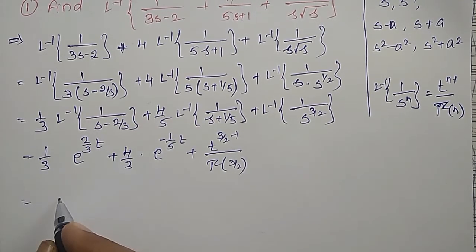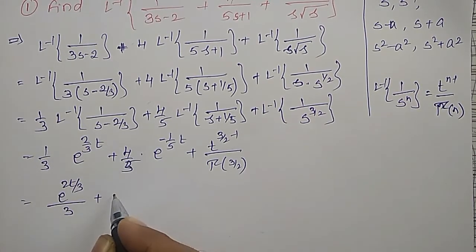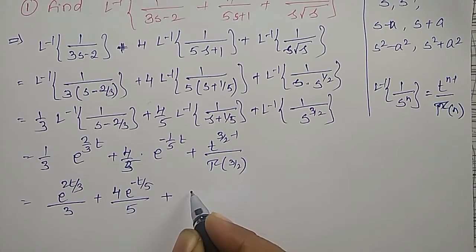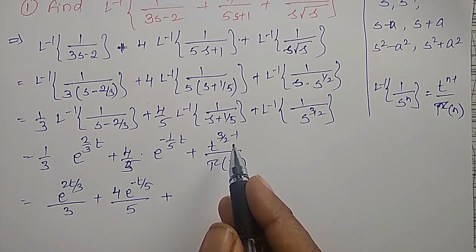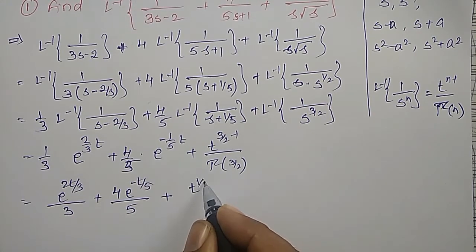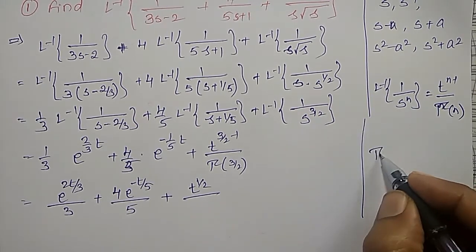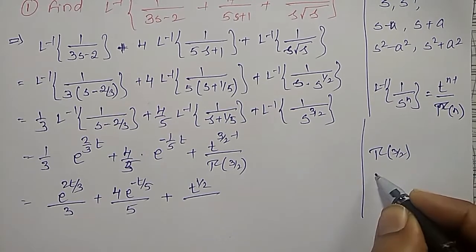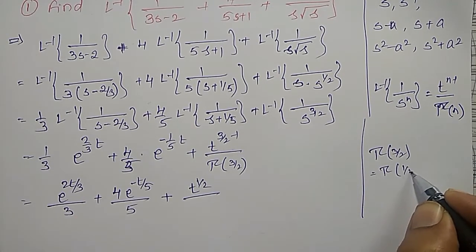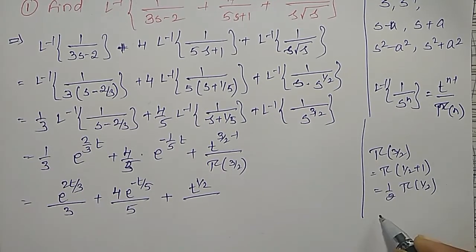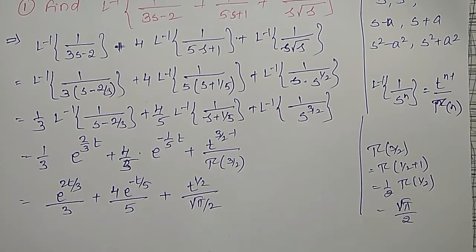Simplifying: the first two terms give e^(2t/3)/3 and 4e^(-t/5)/5. To find Γ(3/2), we use the property Γ(n+1) = n·Γ(n): Γ(3/2) = Γ(1/2 + 1) = (1/2)·Γ(1/2) = (1/2)·√π = √π/2.